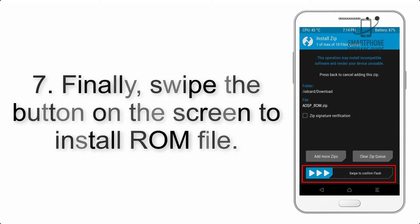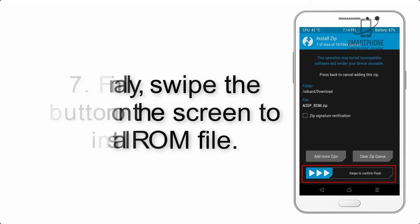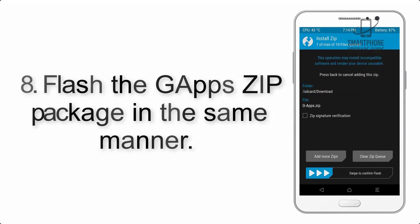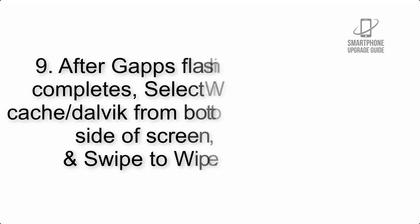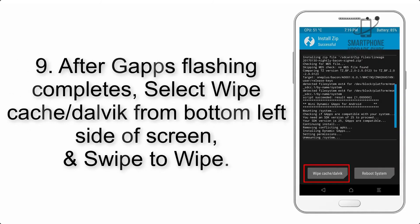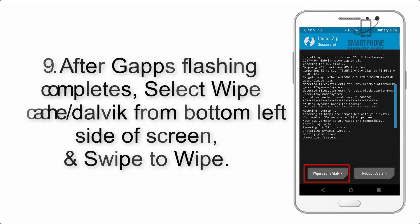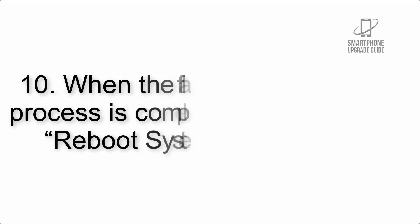Step 7: Swipe the button on the screen to install the ROM file. Step 8: Flash the GApps zip package in the same manner. Step 9: After GApps flashing completes, select Wipe Cache and Dalvik from the bottom left side of the screen and swipe to wipe.